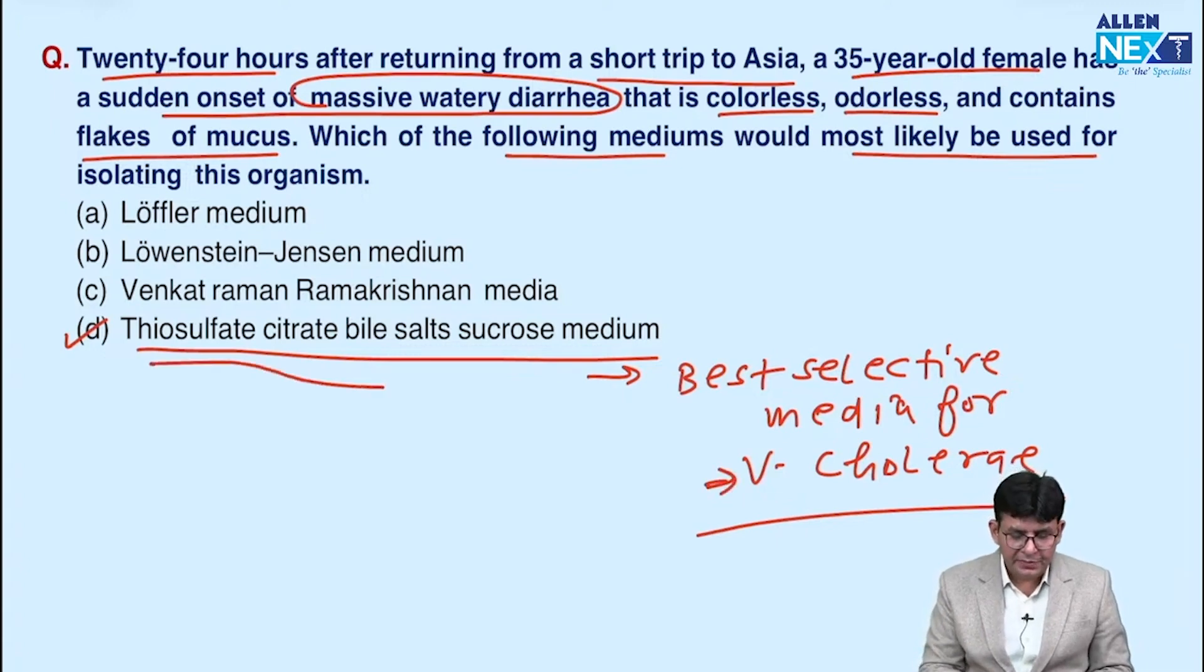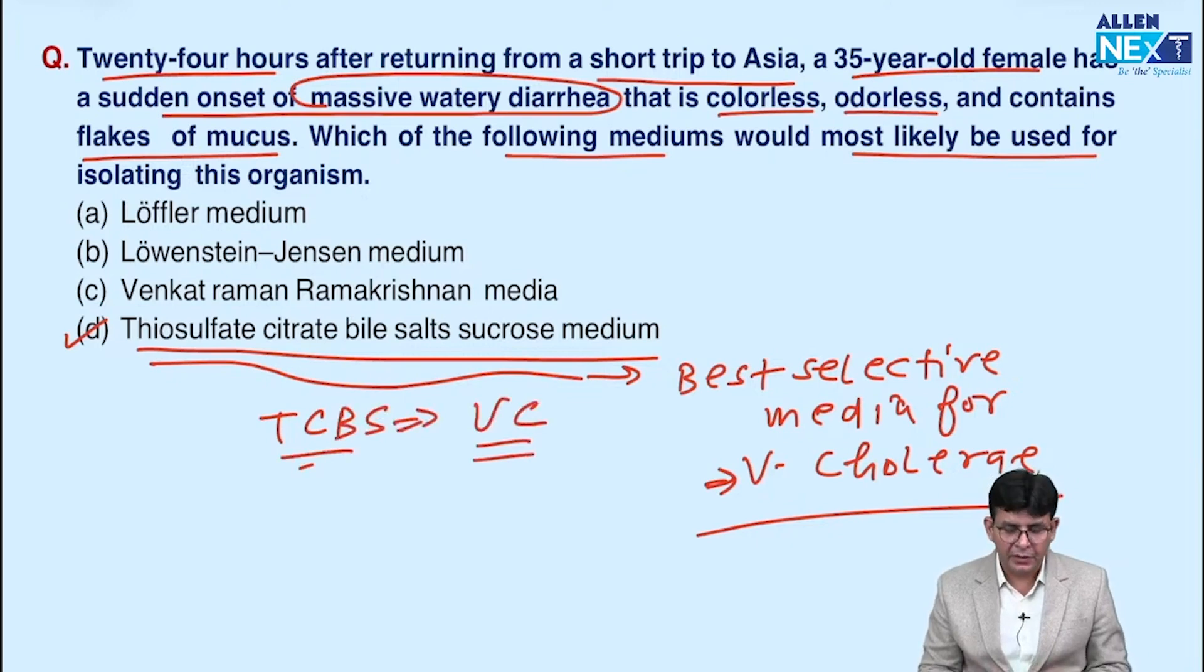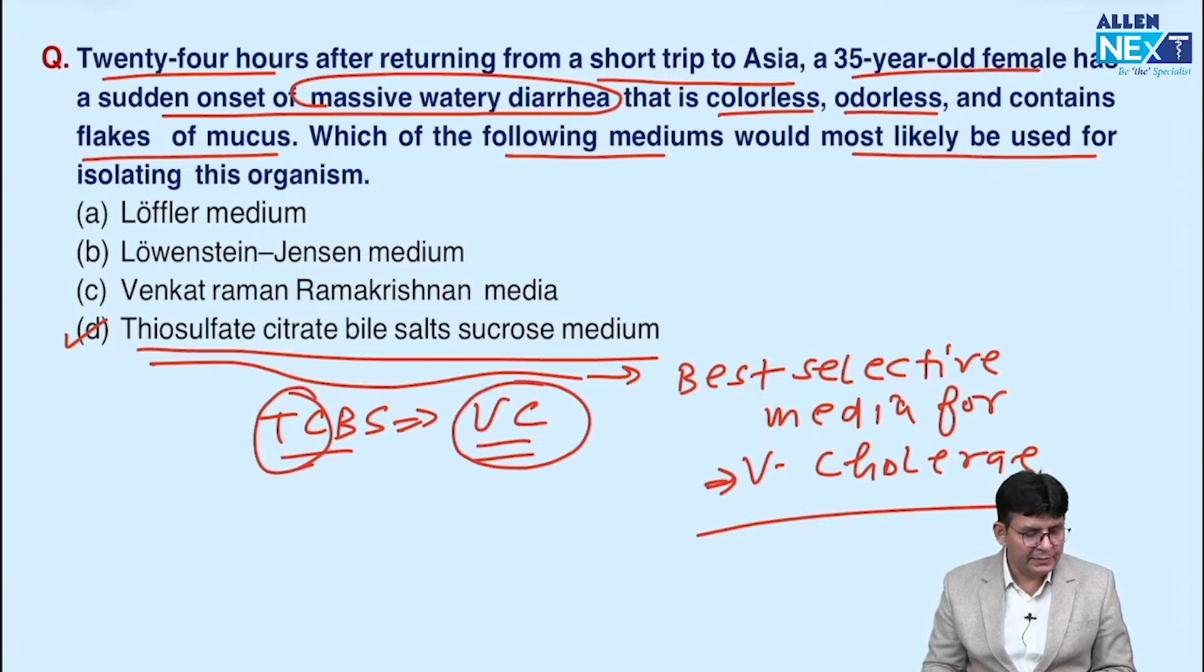Vibrio cholerae and the media which is being used for this is TCBS: Thiosulfate, Citrate, Bile Salt, Sucrose. And how to remember this TCBS? It is a culture media, the best selective media of Vibrio cholerae. TC was given by whom? VC. TC is being given by whom? VC.